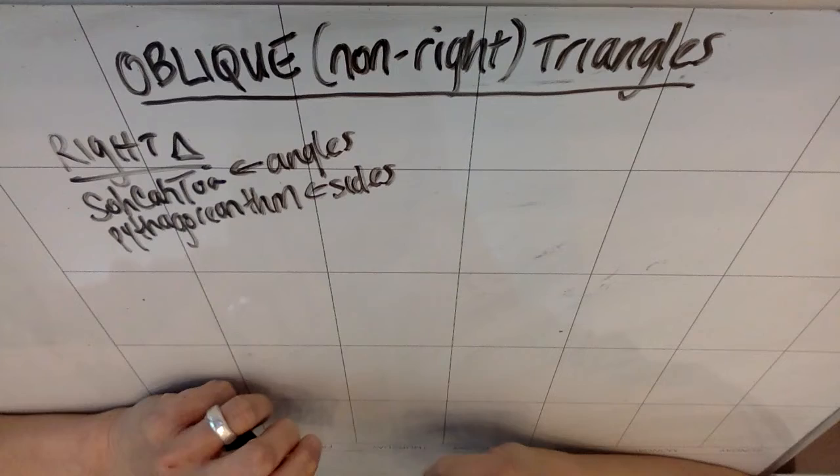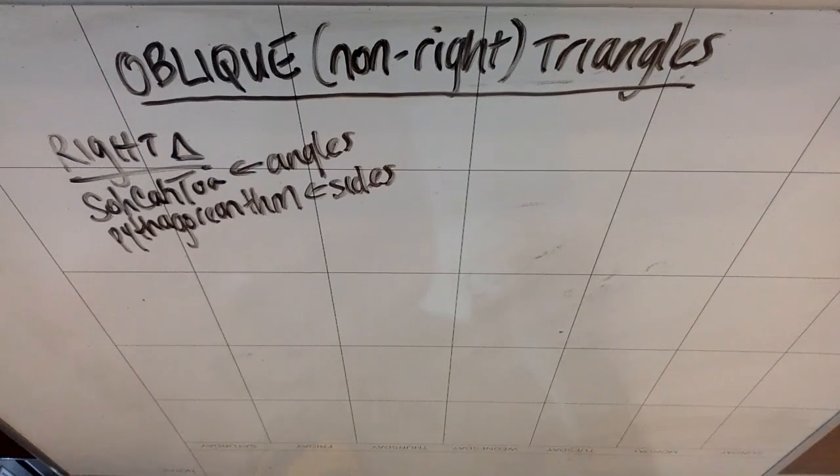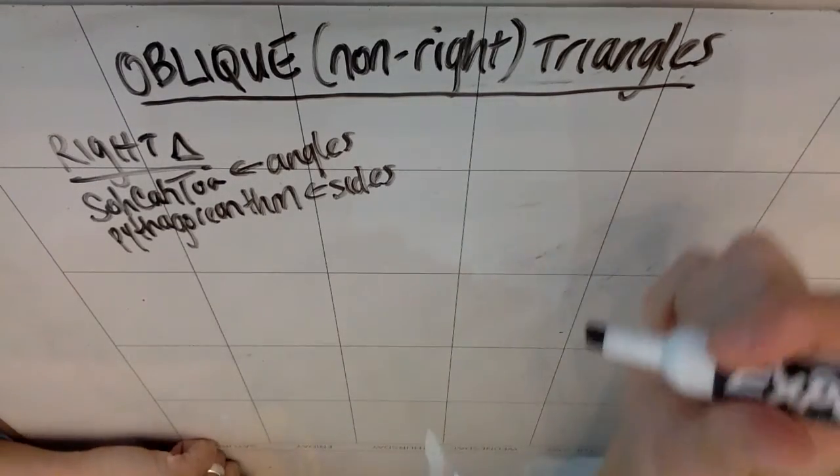The problem is if you have a non-right triangle, which again, we call oblique. When you have a non-right triangle, neither of those things work. So if you have a right triangle, that's great. If you have a non-right triangle, you need other options.